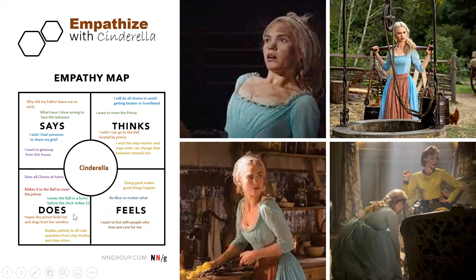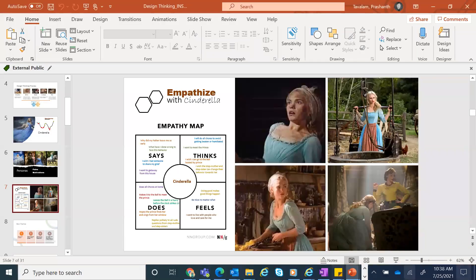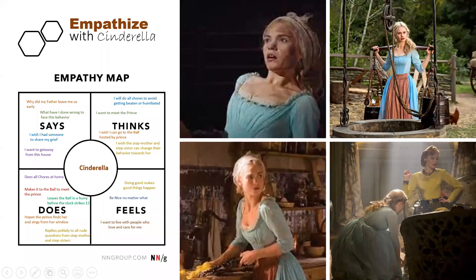Now we'll do a quick activity. Draw a similar empathy map square. Identify one user or customer for whom you want to solve a problem — from your own work life or personal life. Identify that one person and take about 10 minutes to fill it out: identify the person's name, what does she say, what does she think, what does she feel, and what does she do? Take 10 minutes and then we will continue.